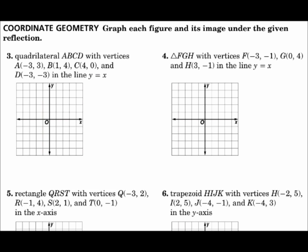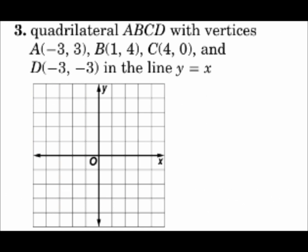Graph each figure and its image under the given reflection. Quadrilateral ABCD with vertices of the points they give us in the line y equals x. So I'll begin by plotting the original points. A is at negative 3, 3.